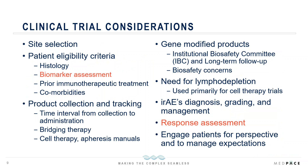When designing a clinical trial, site selection is important — sites should have experience in immuno-oncology. Patient eligibility criteria should be clearly identified, including the histologies to be enrolled. Some trials include all tumor types refractory to standard therapy; others are enriched for a specific tumor type. Biomarker assessment should be clearly defined to identify patients likely to respond. Prior immunotherapeutic treatments, comorbidities, age, and performance status are similarly important considerations for the risk-benefit ratio.